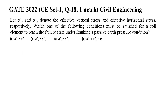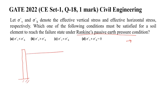We will first see what Rankine's passive earth pressure condition is. According to Rankine's theory, there are some assumptions. First, we need to know what earth pressure is. Let us take a retaining wall with soil retained on one side.